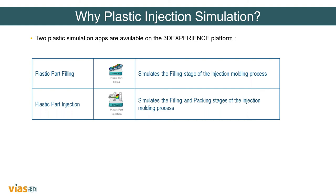There are two apps within the 3DEXPERIENCE platform for injection molding. The Plastic Part Filling app simulates only the filling stage of the injection molding process, considering the plastic part and injection location without the runner system. The Plastic Part Injection app simulates the entire injection molding process including the filling stage, packing/holding stage, warpage and shrinkage simulations, and cooling analysis for the injection mold.